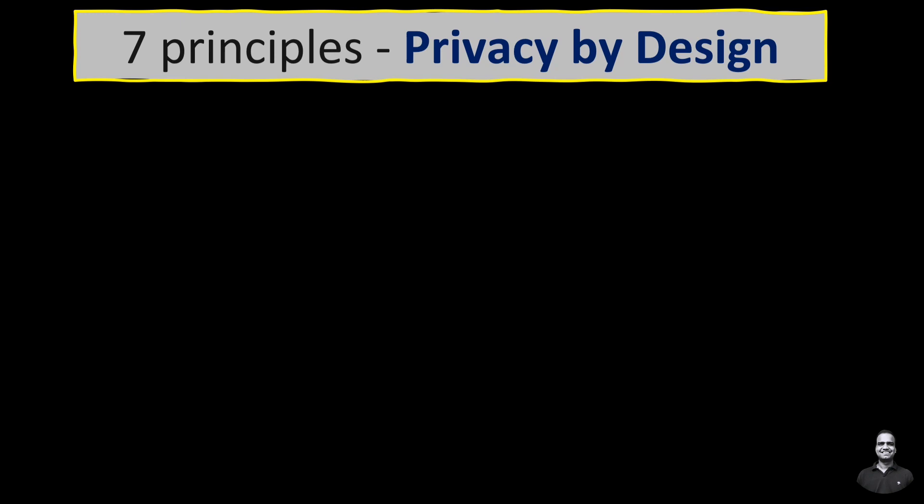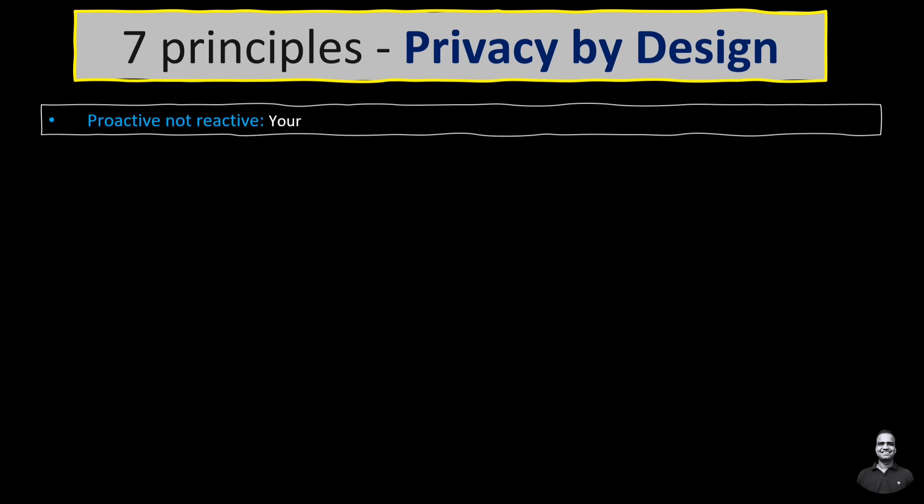So what are the seven principles of privacy by design? Let's discuss each one by one. The first is proactive not reactive — your approach should be to prevent problems and not to solve them later. For example, a software company conducts regular privacy impact assessments before launching any new feature.